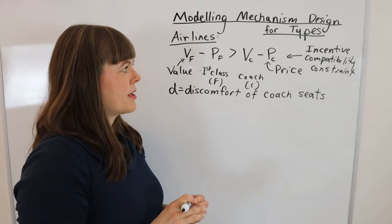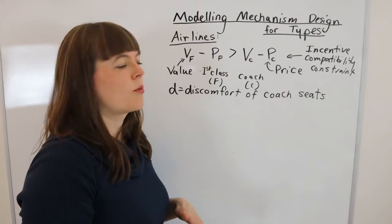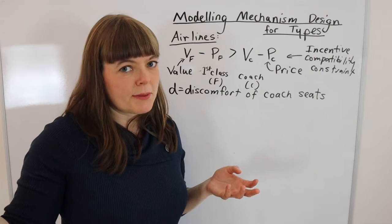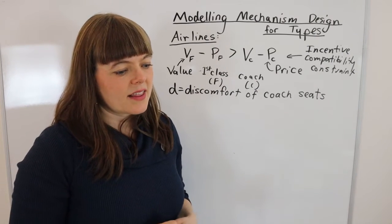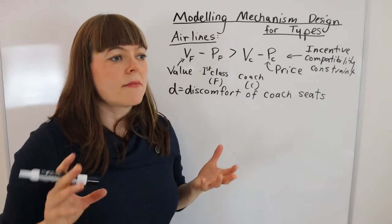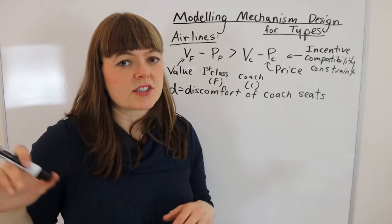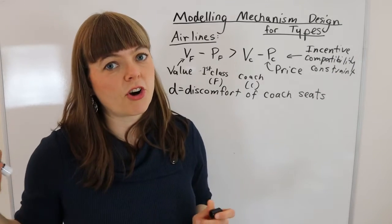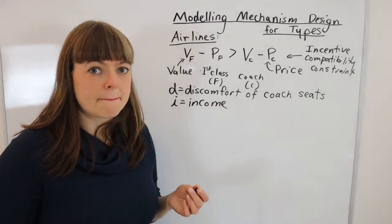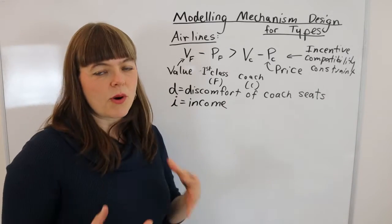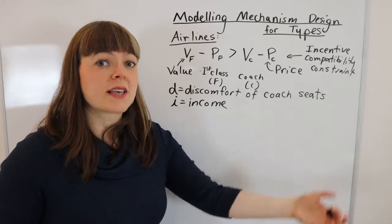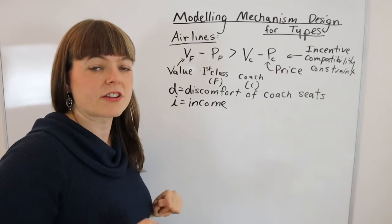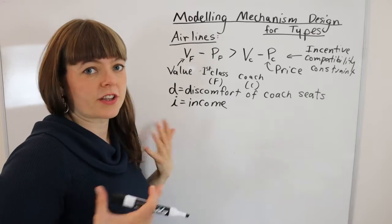The other thing that annoys me is that in microeconomics textbooks these problems only have two types: high types — rich people — and low types, which is everybody else. That annoys me because the world doesn't come in types so clearly distinguished. So I'd like to add complexity by making type a continuous variable, and I'll let that variable be income. Income works well with models you're simulating or using with real-world data. I'm going to start from the airline's perspective, then move to the consumer's perspective.